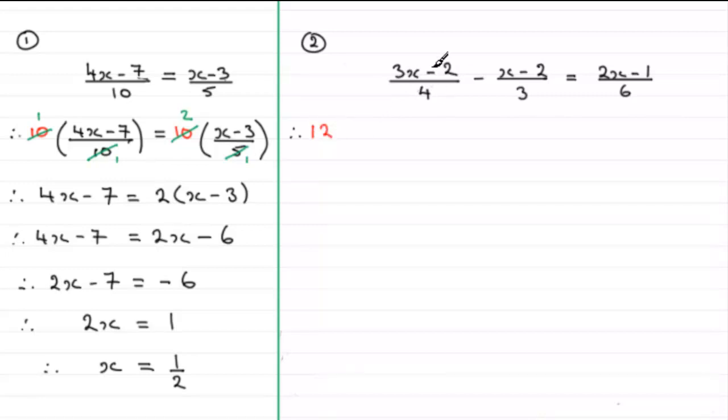So we're going to multiply through by 12. Now remember we've got two terms on the left hand side here but if we imagine this grouped in brackets this would be one term. If we multiply by 12 we've got 12 multiplied by (3x minus 2) over 4, and then minus 12 multiplied by (x minus 2) over 3, and then equals 12 multiplied by (2x minus 1) over 6.